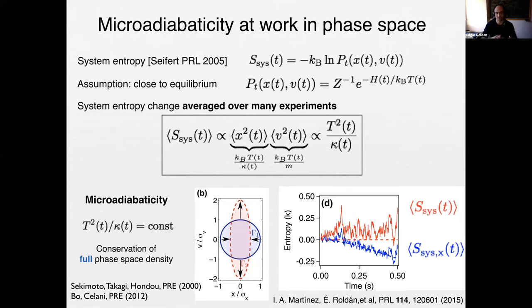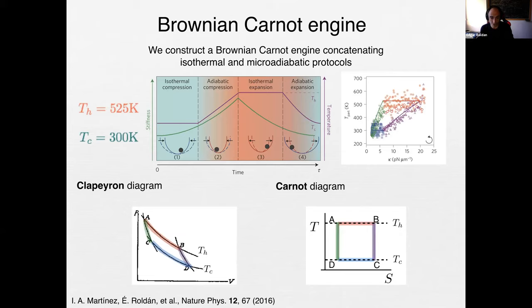If you have questions please ask now — I'm just using an effective equilibrium model, saying I drive the engine slowly so locally the distribution is canonical. Let me present the protocol. There are two effective baths: the cold bath is real water, and the hot bath is when we add noise — giving the particle effective fluctuations like a bath at 525 K.